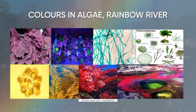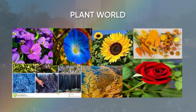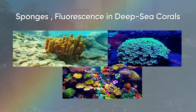Have a look at the amazing bacterial world consisting of different colors. Here's a look at different colors of algae in this vibrant rainbow river, and of course how can we forget the plant world which we witness quite often in our surroundings. Diving underwater, we can still witness the seven colors in the form of sponges and fluorescence in deep sea corals.